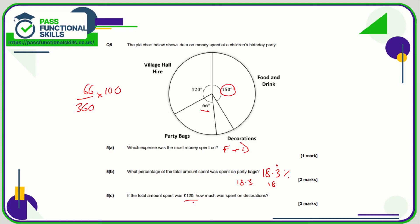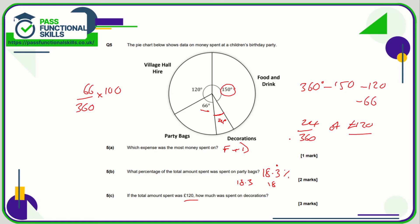If the total amount spent was £120, how much was spent on decoration? First, find the missing angle: 360 minus 150 minus 120 minus 66, which comes to 24 degrees. Then work out 24/360 of £120: 120 divided by 360 multiplied by 24, which gives £8 spent on decoration.